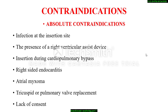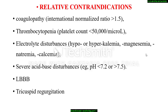Absolute contraindications to pulmonary artery catheter placement include infection at the insertion site, presence of right ventricular assist device, insertion during cardiopulmonary bypass, right-sided endocarditis, atrial myxoma, tricuspid or pulmonary valve replacement, and lack of consent. Relative contraindications include coagulopathy, thrombocytopenia, electrolyte disturbances, severe acid-base disturbances, left bundle branch block, and tricuspid regurgitation. A bleeding diathesis increases the risk of hemorrhage; electrolyte and acid-base disturbances increase the risk of persistent life-threatening arrhythmias; and in patients with left bundle branch block, there is a chance of complete heart block.